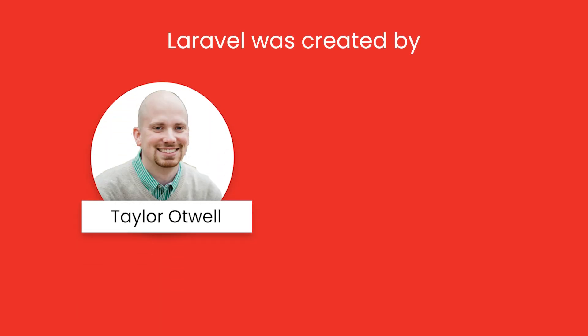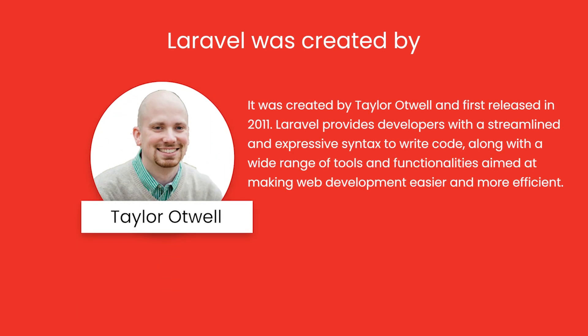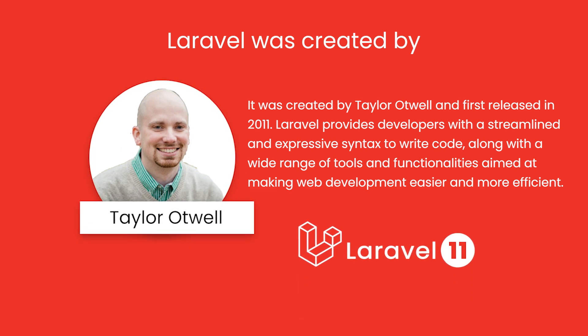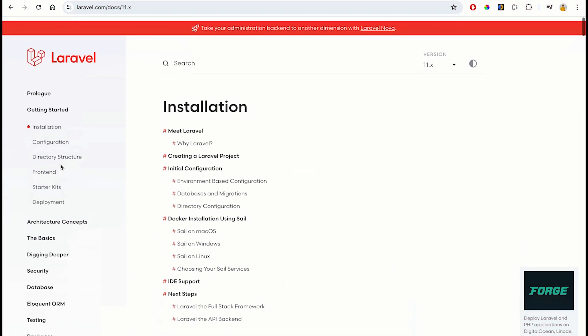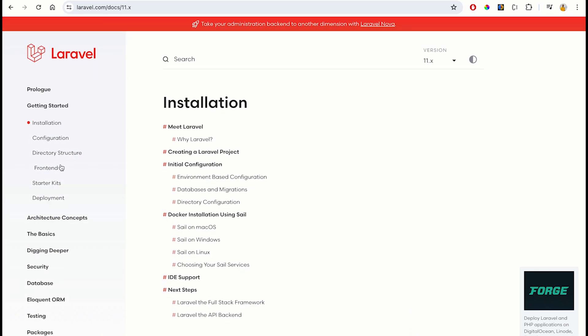Laravel was created by Taylor Otwell in 2011 and is mostly updated within a six-month timespan. As of now the latest version is version 11, though it might change over time. The structure of the documentation is quite well maintained — you can find every detail about integration and how to include anything. That's a brief description of Laravel.